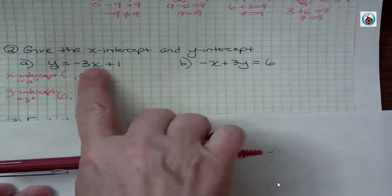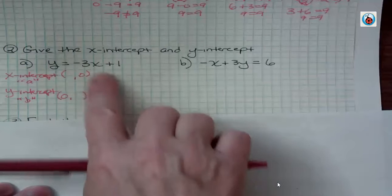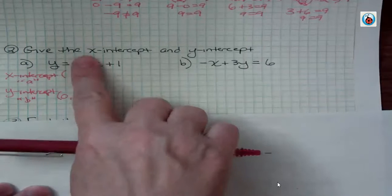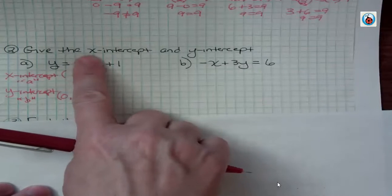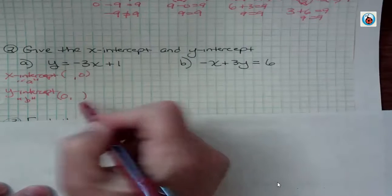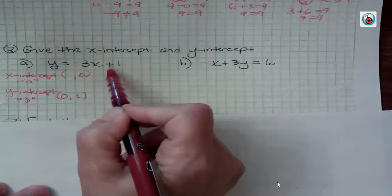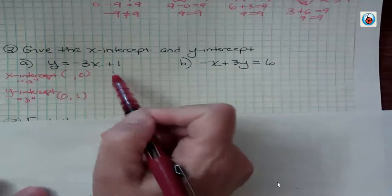The y-intercept here is very easy. If x is 0, negative 3 times 0 would just fall out, and you'd have y equals 1. So very little work when it's in that format. We know this number at the end, including the sign in front of it, shows us what the y-intercept is.